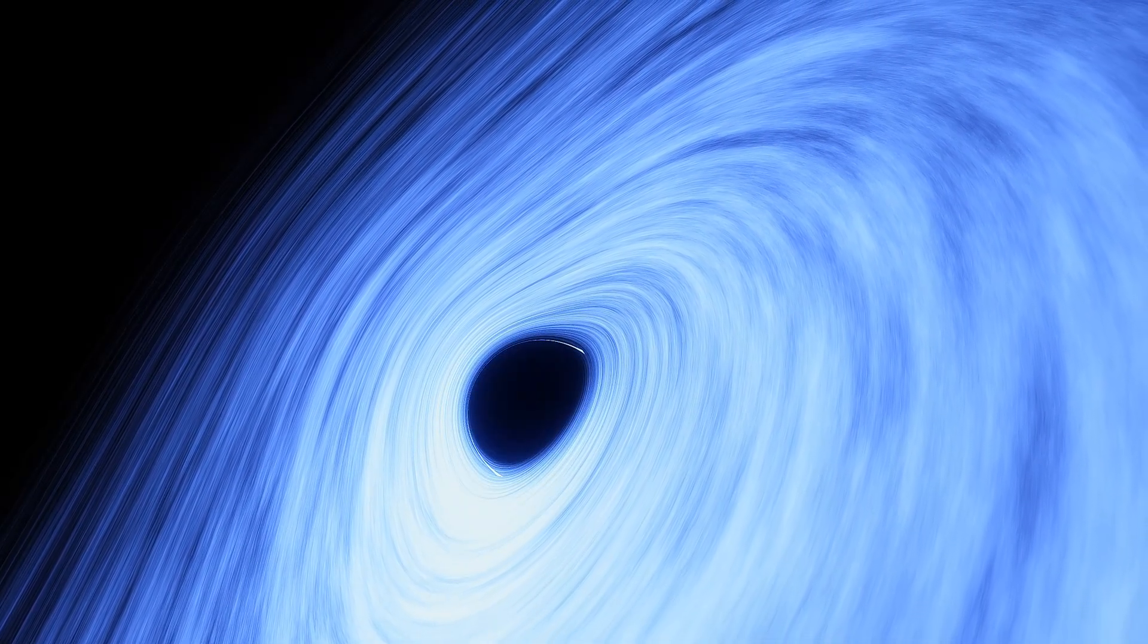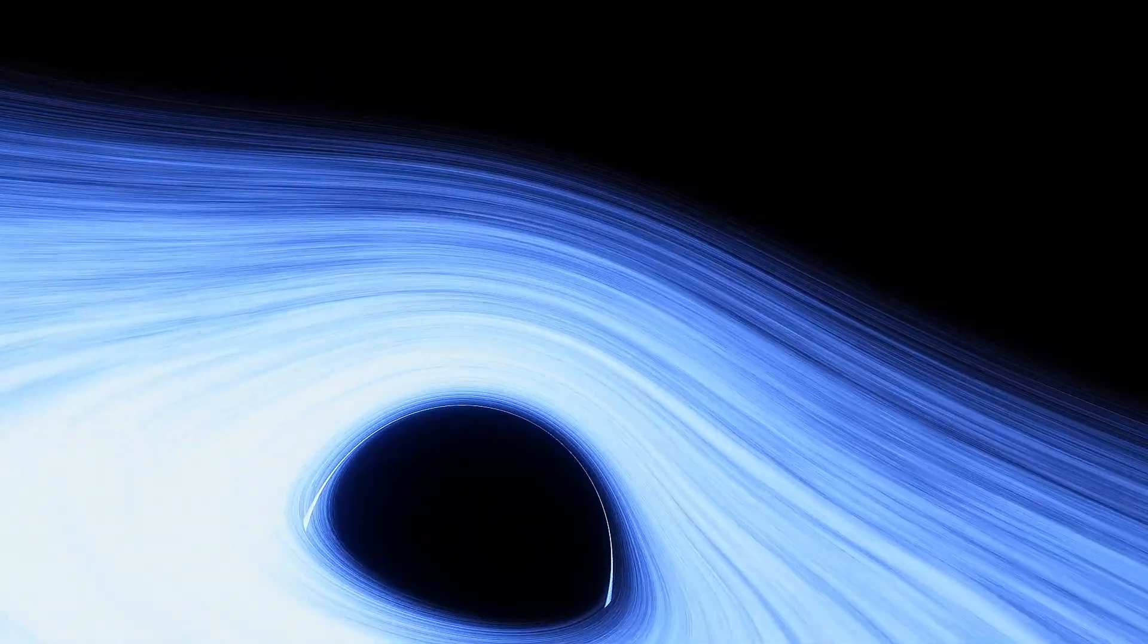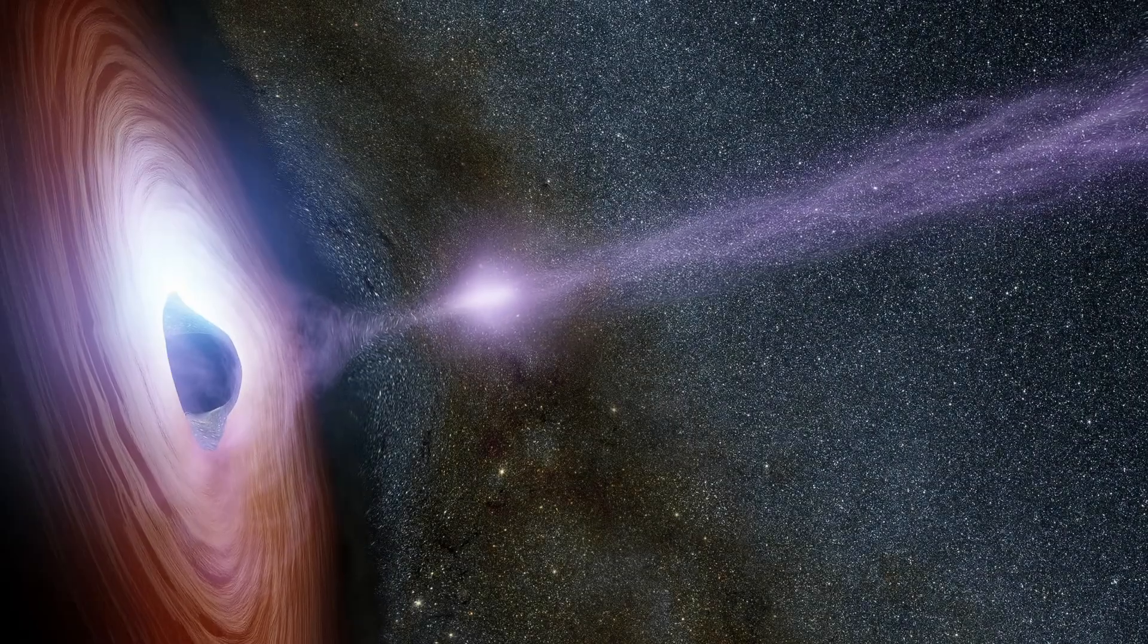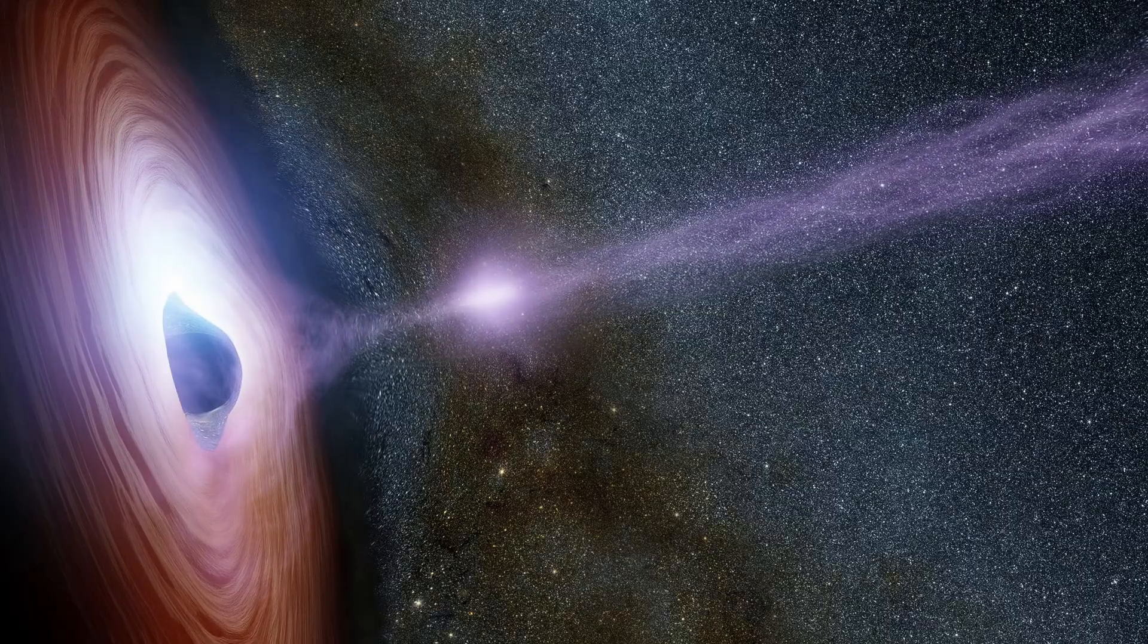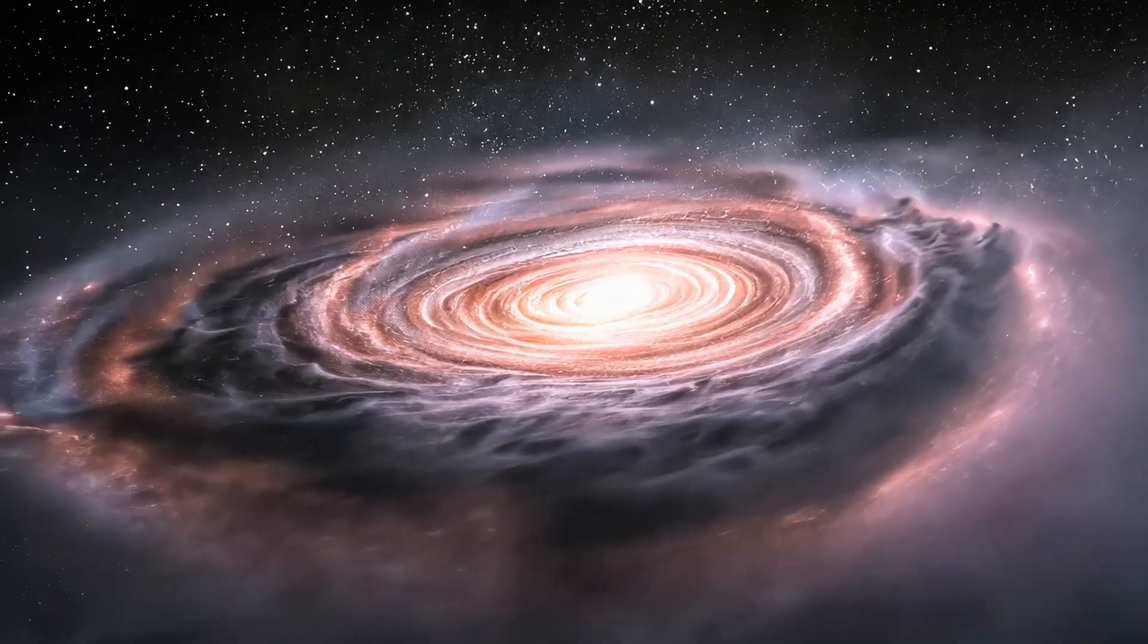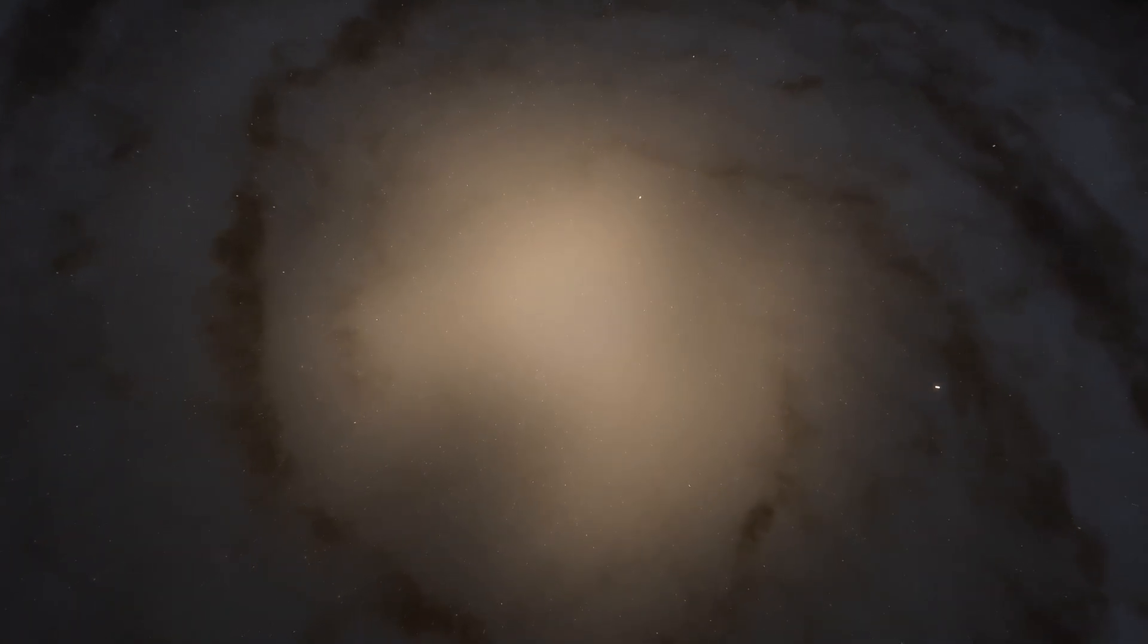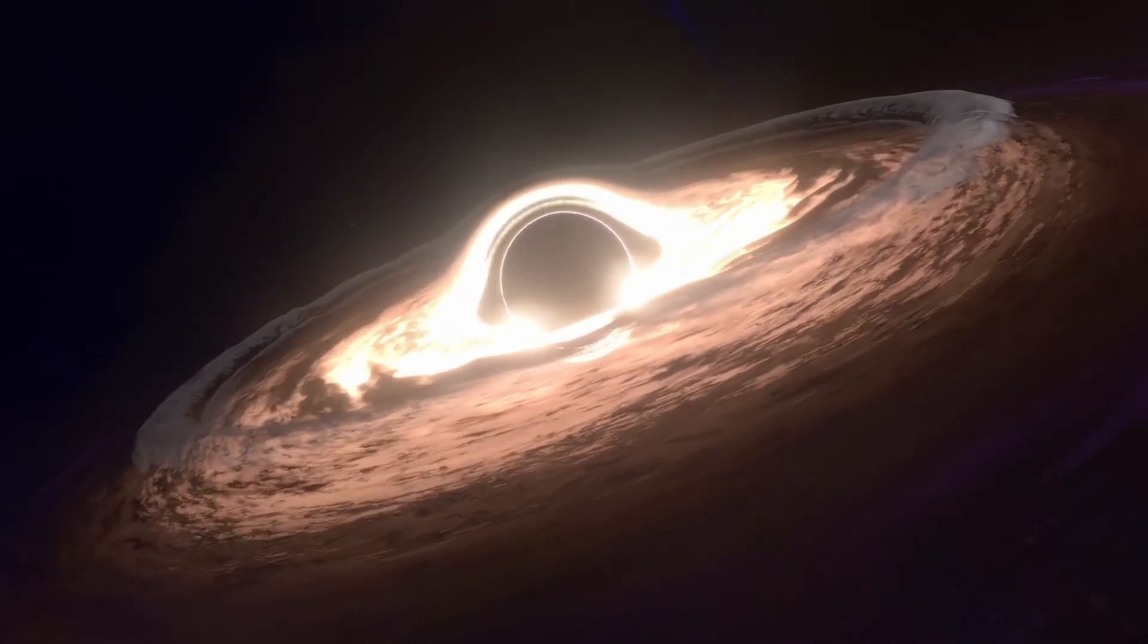But how do they get so huge? There are three leading ideas. One: collapse of enormous early stars. In the early universe, some stars may have been hundreds of times heavier than anything we see today. When they died, their cores collapsed into black holes that became seeds for future giants. Two: merging over cosmic time. Galaxies collide. Stars drift toward danger. Black holes meet and merge. Little becomes big. Big becomes giant. Three: direct collapse from huge clouds of gas. Imagine a cloud of gas larger than millions of suns, collapsing not into stars, but directly into a single black hole. This would skip the entire star phase, creating monsters from day one.